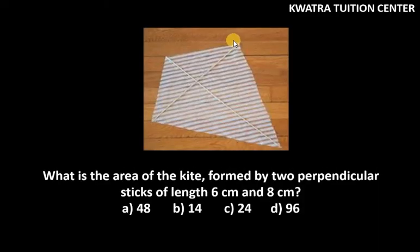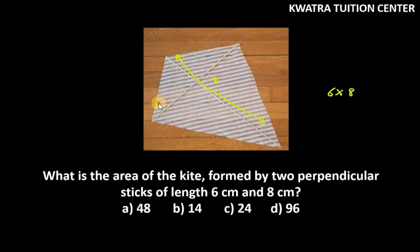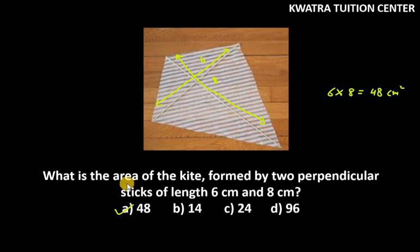The last part asks: what is the area of the kite formed by two perpendicular sticks of length 6 cm and 8 cm? The area of a kite is half the product of its diagonals. So the area is (8 × 6) / 2 = 24... actually 8 × 6 = 48 square centimeters, which is option 8. That is the end for case study 4. I hope you liked it — please like, share, and subscribe to our channel. Thank you.